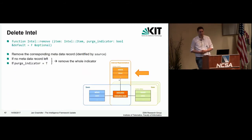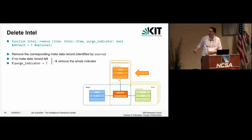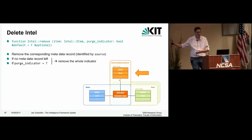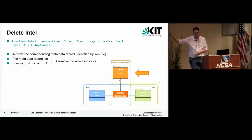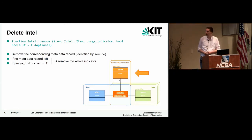Let's start with delete. Before Bro 2.5, it was just not possible to delete intelligence items — if you had fed intelligence items into Bro, they were in the internal representation and to get rid of them you had to restart Bro. We implemented the intel_remove functionality: it receives an intelligence item specifying which indicator and linked metadata should be removed. By default it removes the metadata record, and if it's the last one it also removes the indicator. But if you don't care how many metadata records are linked, you can set the purge parameter and the whole indicator will be removed regardless.